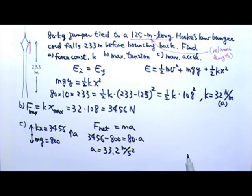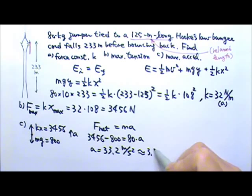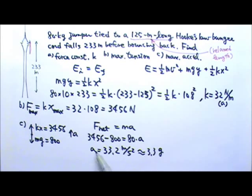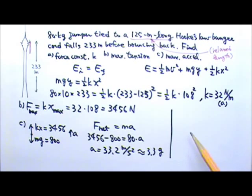That's a large acceleration. Since g is 10 m/s², this is about 3.3 G. We feel acceleration — to provide this large acceleration there has to be a net force. Since the acceleration is 3.3 G, the net force on the person is 3.3 times the person's normal weight.